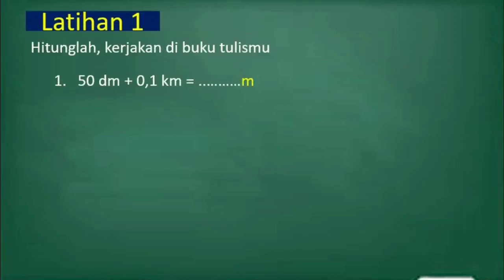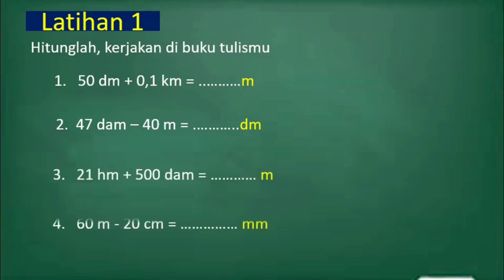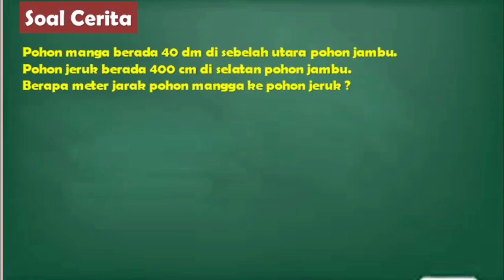Latihan 1 - Soal cerita. Pohon mangga berada 40 desimeter di sebelah utara pohon jambu. Pohon jeruk berada 400 cm di selatan pohon jambu. Berapa meter jarak pohon mangga ke pohon jeruk? Langkah pertama adalah kita buat arah mata angin: utara, selatan, barat, dan timur. Kemudian kita buat ilustrasi letak pohon jambu, jeruk, dan mangga.